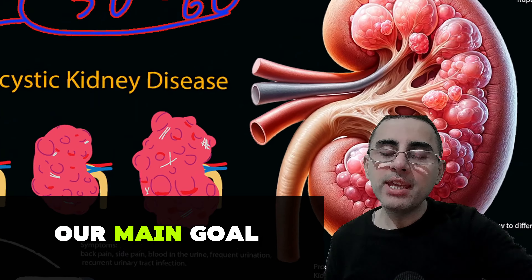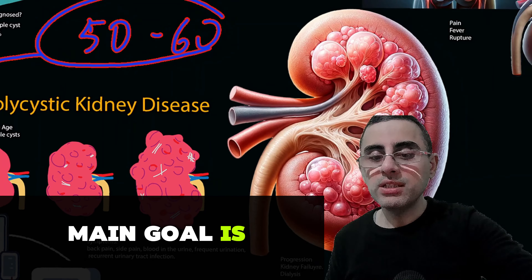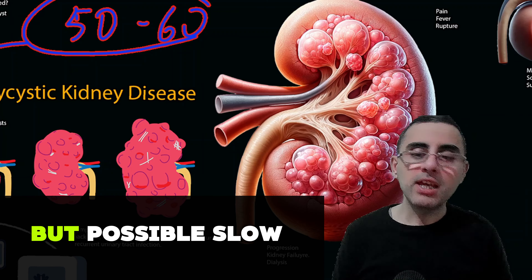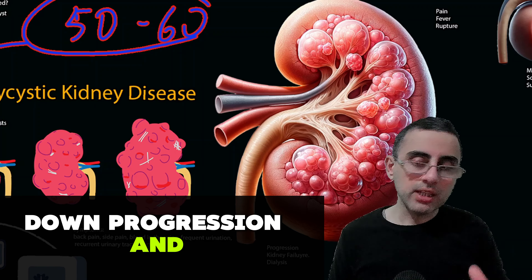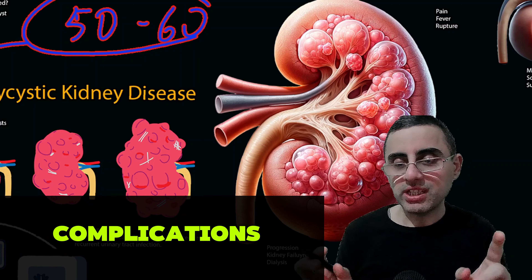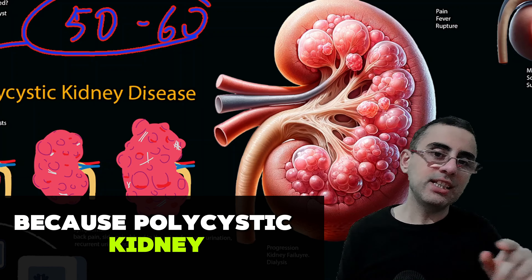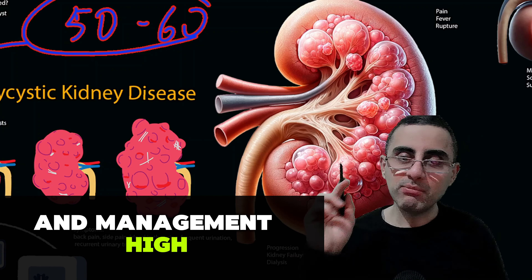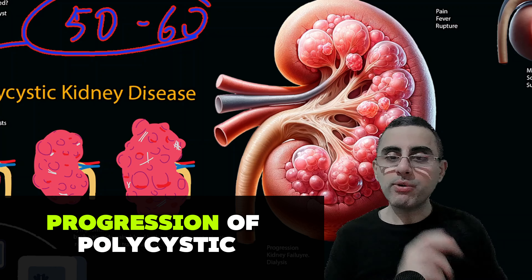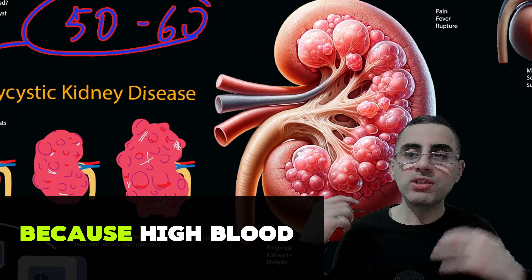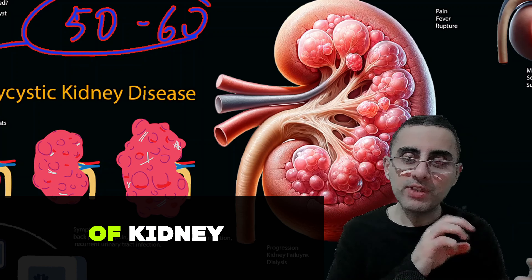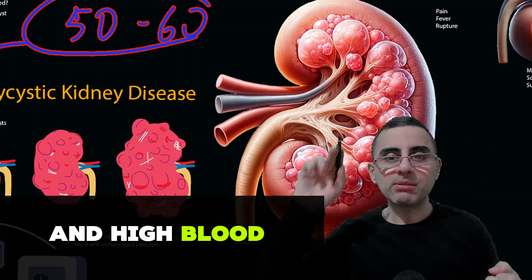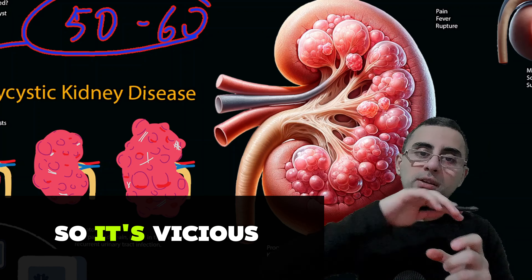Our main goal is to stop or slow down progression. It's impossible to completely stop progression, but it is possible to slow it down. We can manage complications — polycystic kidney disease causes hypertension, high blood pressure, and we should monitor and manage high blood pressure to slow down progression, because high blood pressure further damages kidneys. It's a vicious cycle: polycystic kidney disease causes high blood pressure, and high blood pressure damages kidneys.